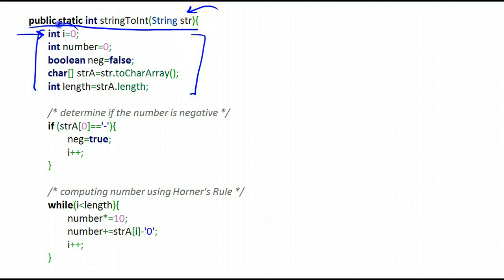i is being used, this variable is being used to go over every single character in the string. So we're going to be looking at every single character in the string, each one of which is a digit or a negative, a dash.